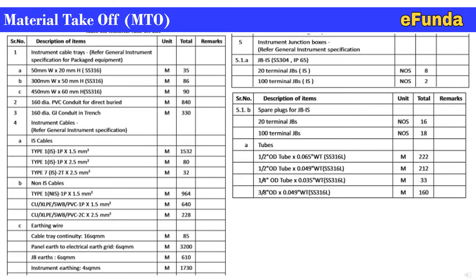For instrument cables, refer to the attached specifications. For IS cables, we have: Type 1 — one pair into 1.5 sq mm; Type 1 — one pair into 2.5 sq mm; and Type 7 — two triad into 2.5 sq mm. The required quantities and units are included in the total and unit columns. For non-IS cables: Type 1 NIS 1 pair 1.5 sq mm; Type 1 NIS 1 pair 1.5 sq mm CU XLPSW PVC 1 pair into 1.5 sq mm; and similarly 2 core into 2.5 sq mm, with quantities and units also included.